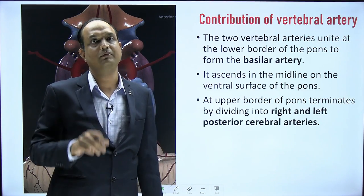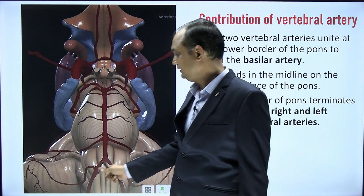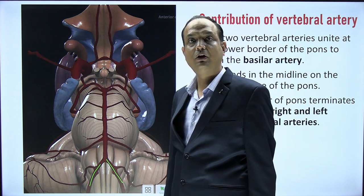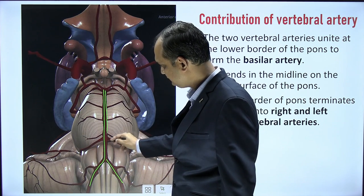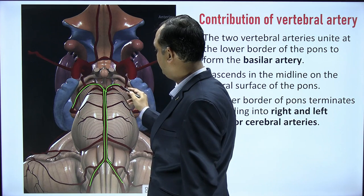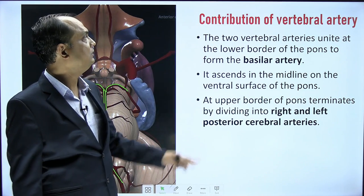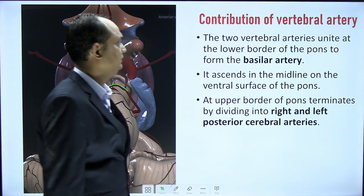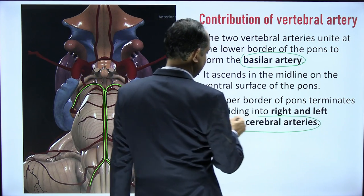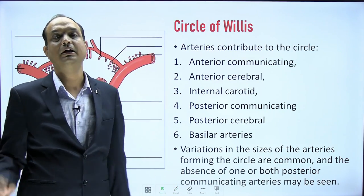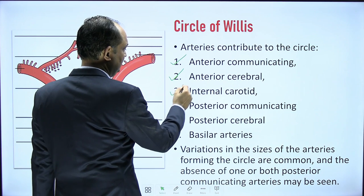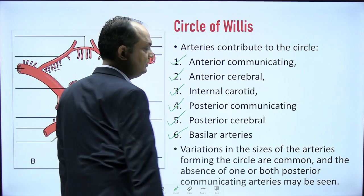Regarding the contribution of the vertebral artery: both right and left vertebral arteries enter the cranial cavity through the foramen magnum and on the ventral surface of the pons unite to form the basilar artery. At the upper border of the pons, the basilar artery divides into the two posterior cerebral arteries. So the components of the Circle of Willis are: anterior communicating artery, anterior cerebral artery, internal carotid artery, posterior communicating artery, posterior cerebral artery, and basilar artery.